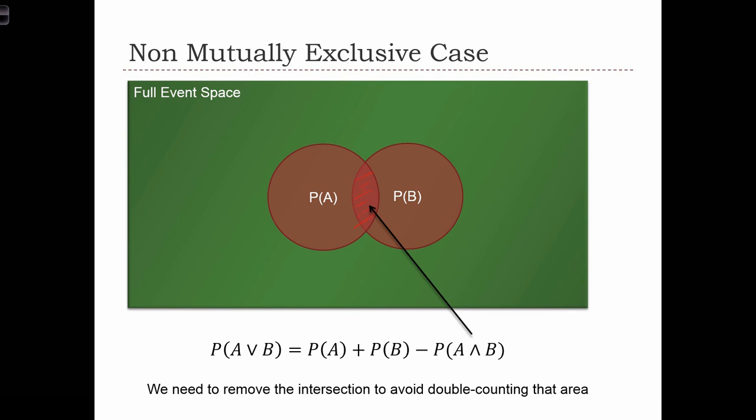In this case, we need to remove the intersection from the summation of the two probabilities in order to make sure that we don't double count this intersection.